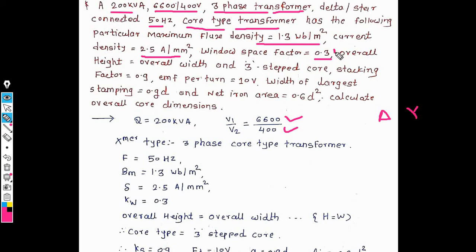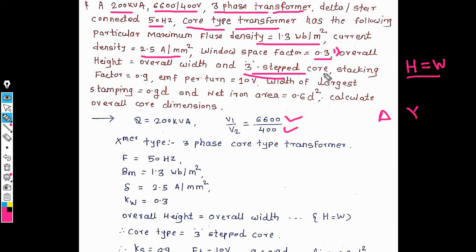The first condition is that the overall height is equal to the overall width — that is, H equals W. This is a three-phase core-type transformer in which a three-step core is used. The stacking factor is 0.9 and the EMF per turn is 10 volts.